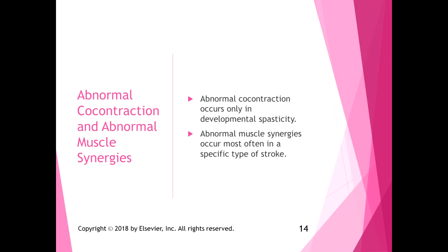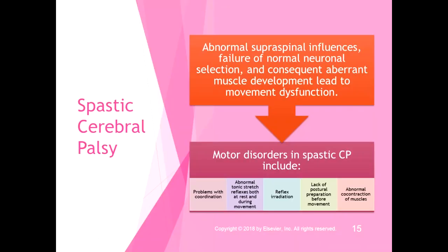Abnormal co-contraction occurs only in developmental spasticity, and abnormal muscle synergies occur most often in a specific type of stroke, which will be discussed in the corresponding chapter. With spastic cerebral palsy, you get abnormal supraspinal influences, failure of normal neuronal selection, and aberrant muscle development that lead to movement dysfunction.